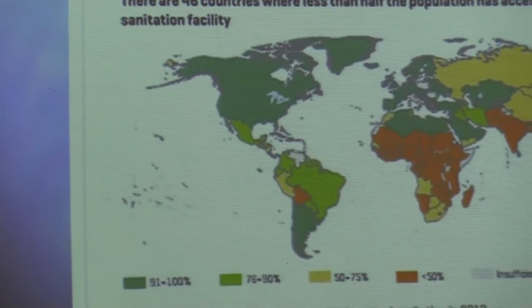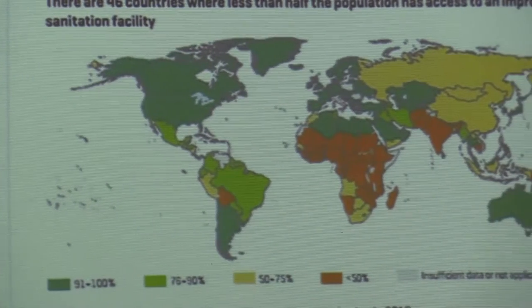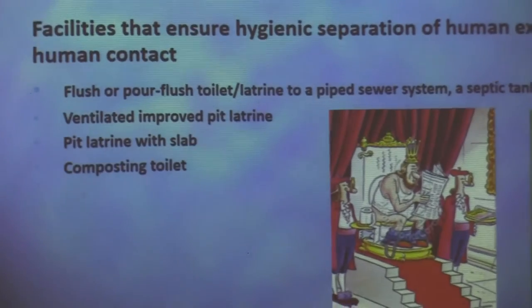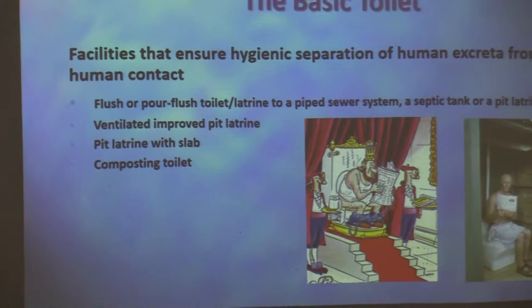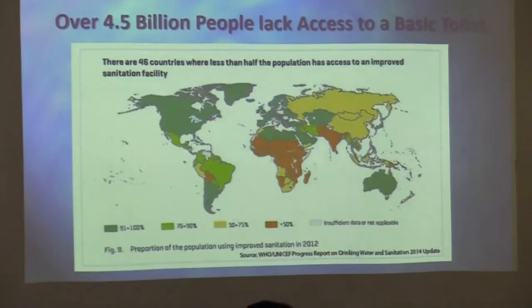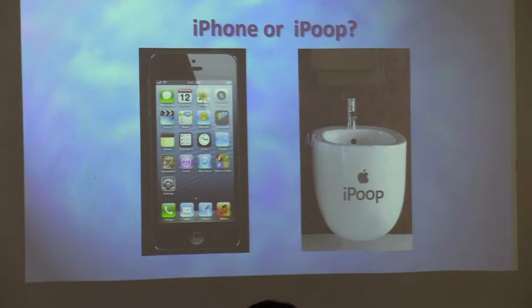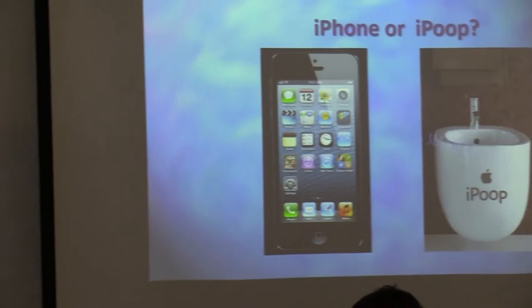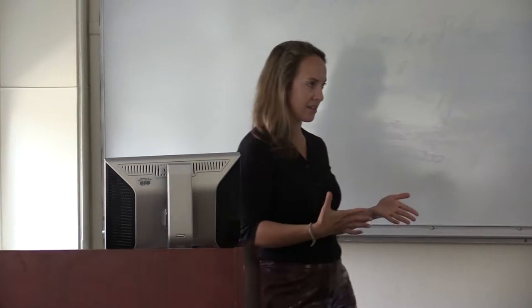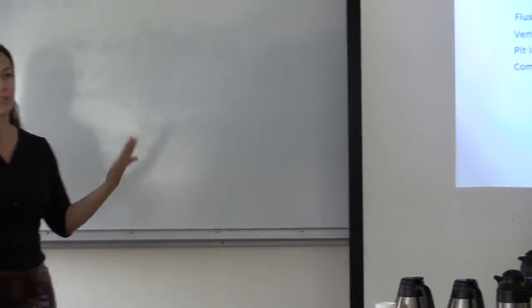Sanitation has two aspects: there's the toilet piece and the clean water piece, and we'll talk about how these are related. When we're talking about a basic toilet, we're not talking about any sort of fancy high-tech access. We're just talking about a very basic toilet — the concept being that you are separating human excrement from direct human contact.